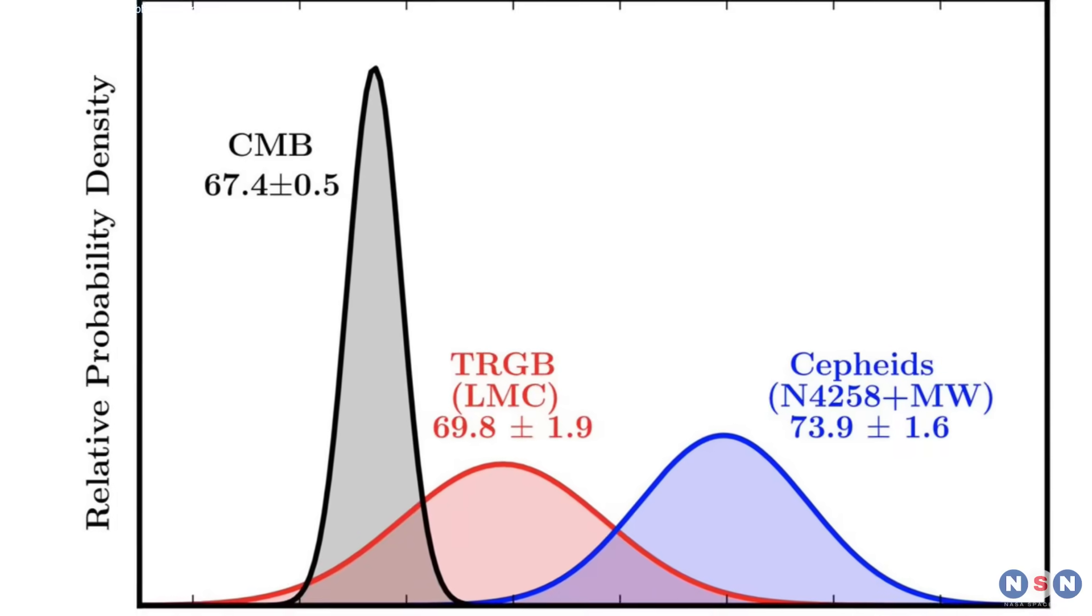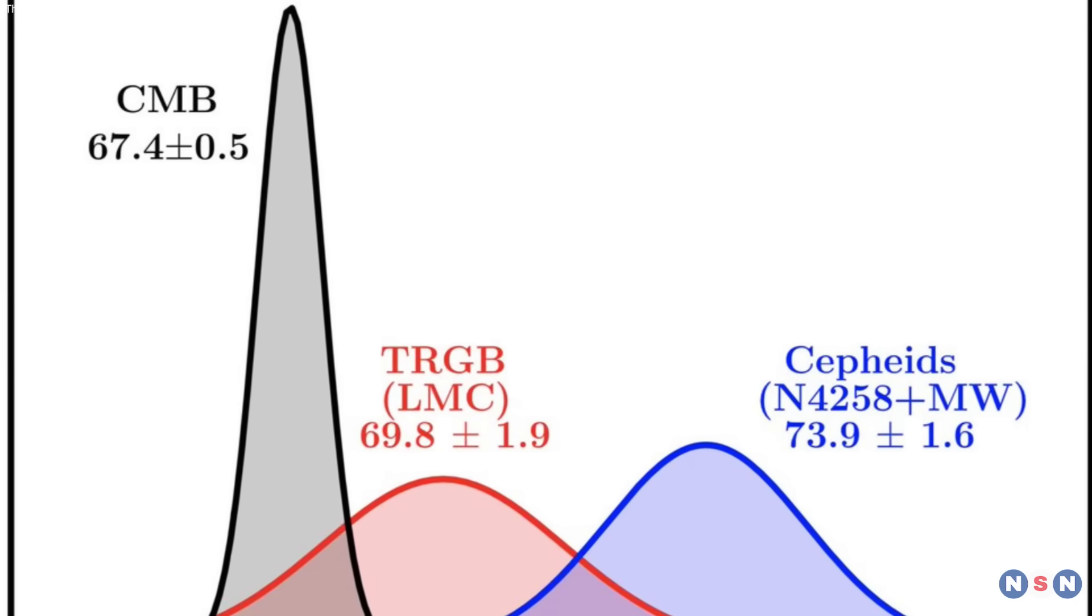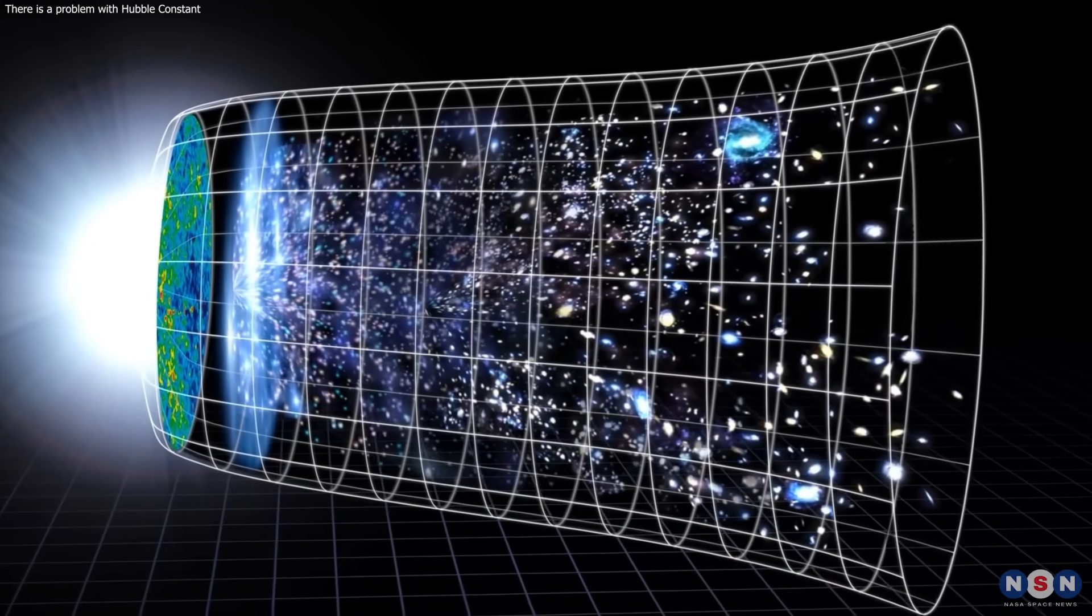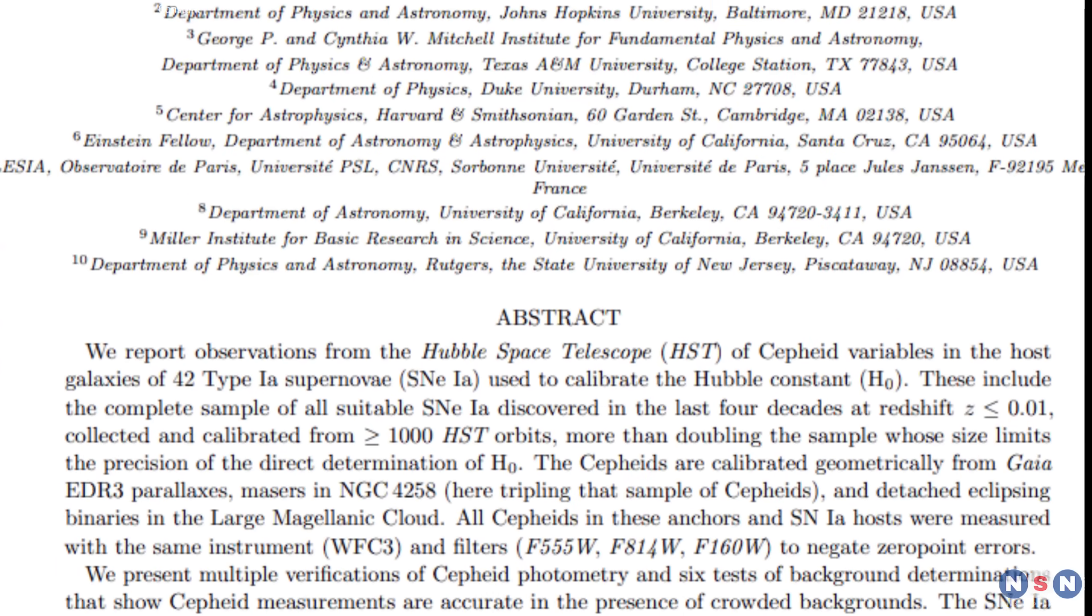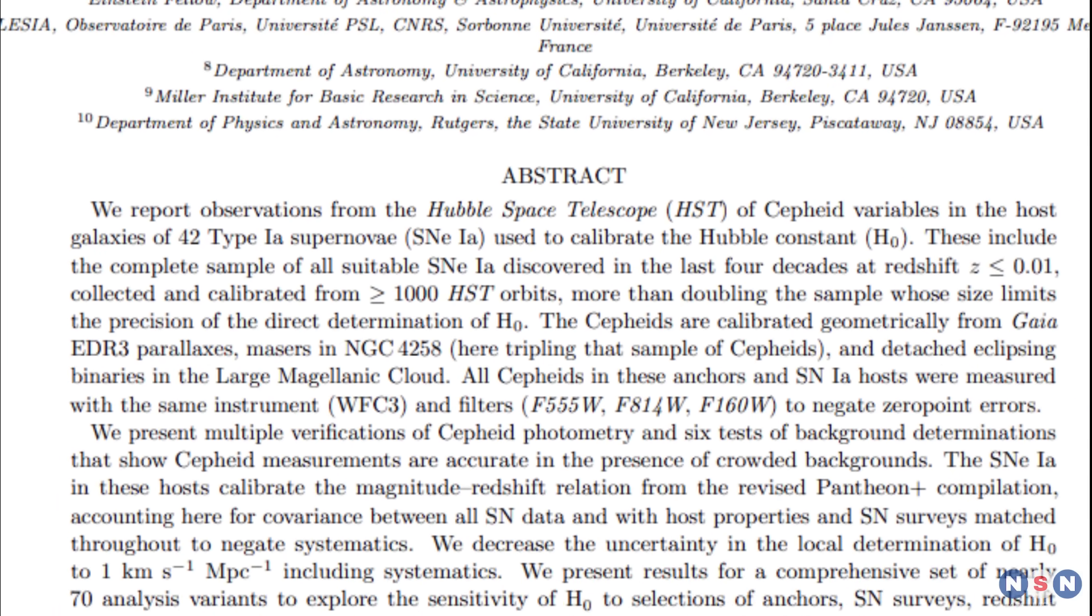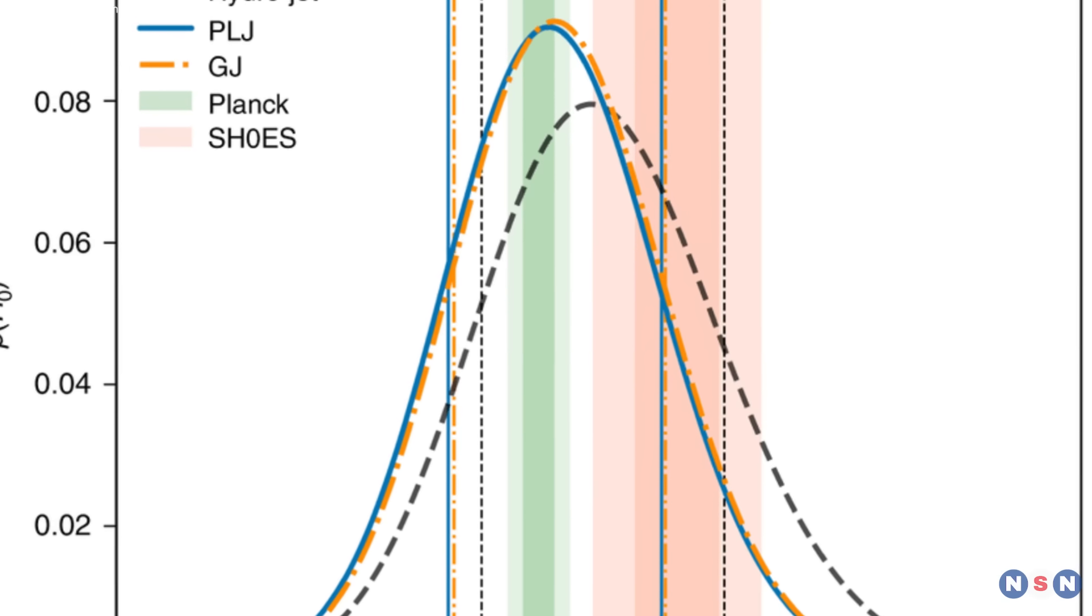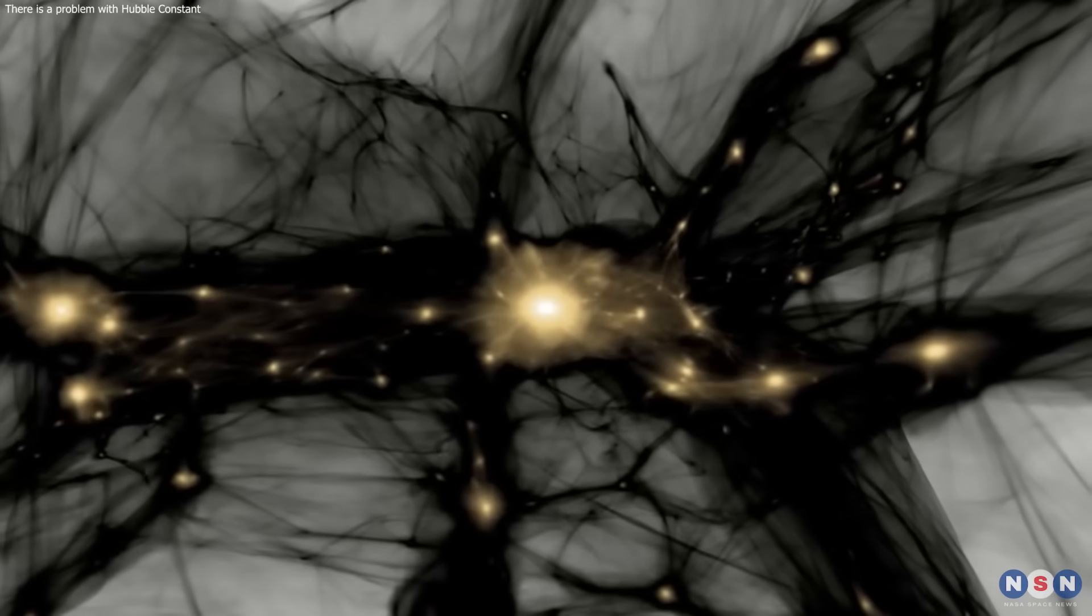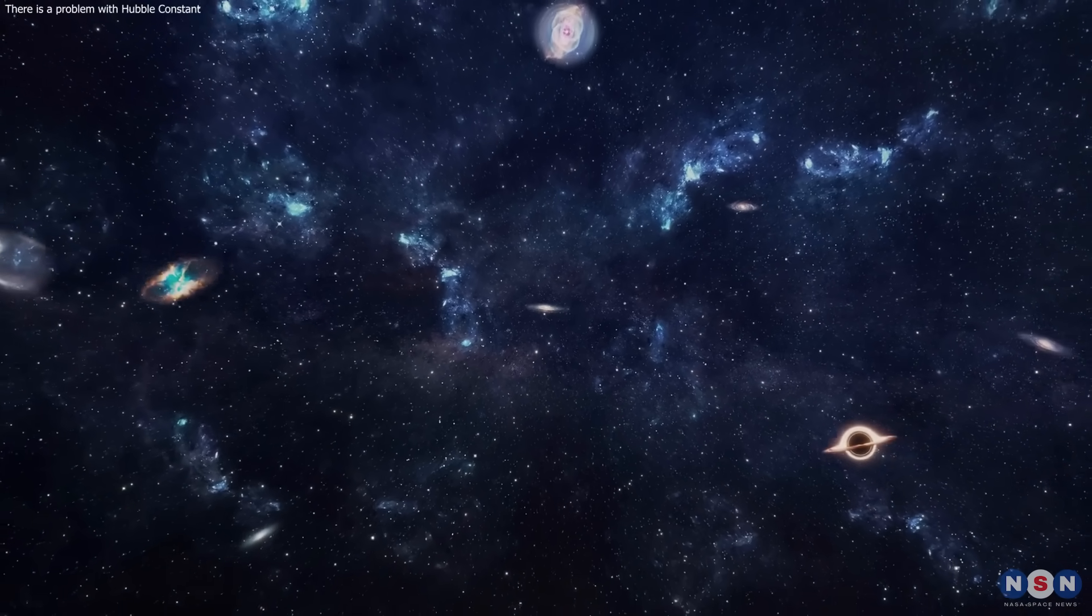In conclusion, we have learned that the Hubble constant problem is one of the most intriguing and perplexing mysteries in cosmology, and that it may reveal some new physics beyond the standard cosmological model. We have explored the latest study that used the Hubble Space Telescope to measure the Hubble constant and how it differs from the prediction of the Planck satellite. We have also discussed some of the possible implications and solutions for this discrepancy, such as the nature of dark energy, dark matter, and dark radiation, and the need to revise our understanding of the universe.